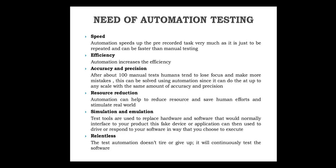Automation testing is a relentless process — it will never tire. If you want to run a test more than 50 or 60 times, in manual testing after some point the efficiency and speed will go down — it becomes a tiring process. But in automation testing it executes on the machine, so it is relentless; it will never give up and will continuously test the software.